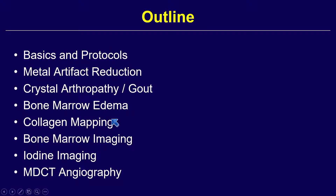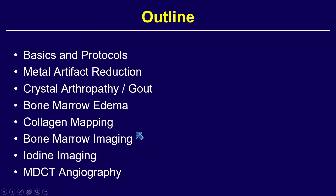Some of these are emerging. I think collagen mapping, especially in the spine, is becoming clinically viable. Bone marrow imaging is interesting for oncological applications, then iodine imaging, and especially for CT arthrography. We're actually going to skip the angiography because we don't have time.